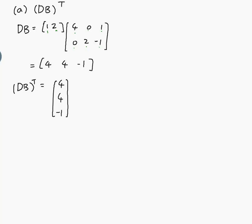Part B, let's have a look. We're trying to do AB. Well, A is 1, 0, 3 and B is 4, 0, 1, 0, 2, minus 1. And let's have a look. We would have to have the same number of spaces across here as we do down here, which we don't. We've got 1 across and 2 down, so this matrix is undefined.